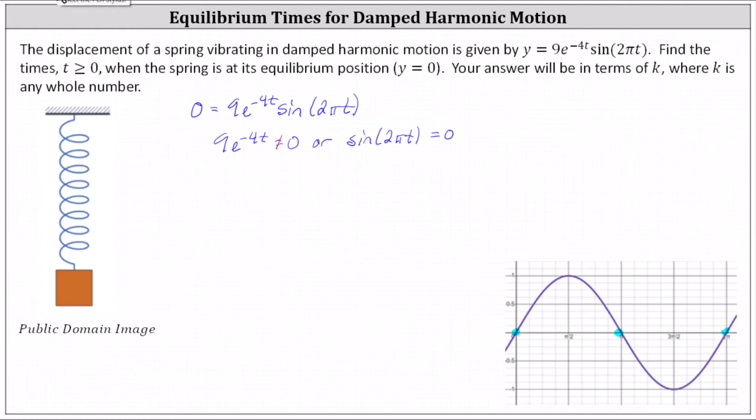Which means for our equation, because the input angle is 2πt, to find all the values of t where sine 2πt equals zero, we set 2πt equal to multiples of π using k as any whole number. Which means we set 2πt equal to π times k.